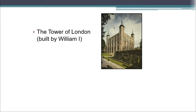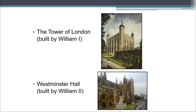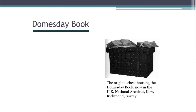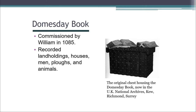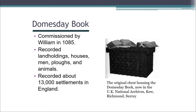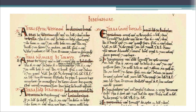Incidentally, you can still see today some of the architectural remnants of William's rule: the Tower of London, built by William himself, and Westminster Hall, which was built by his son and successor, William II. We know a good deal about the circumstances in England at the time of William's succession because of the Doomsday Book, commissioned by William in 1085. He sent a team of clerks throughout the realm, and they recorded land holdings, houses, the number of men, plows, and animals on each farm and in each settlement. There were about 13,000 settlements in England at that time, and the population was roughly one and a half to two million people. The Doomsday Book was written, by hand of course, in Latin, and amazingly it still survives today in the British National Archives.